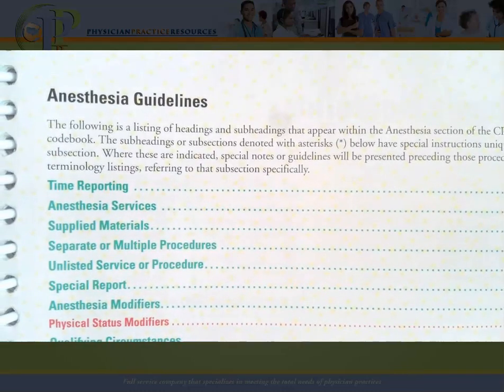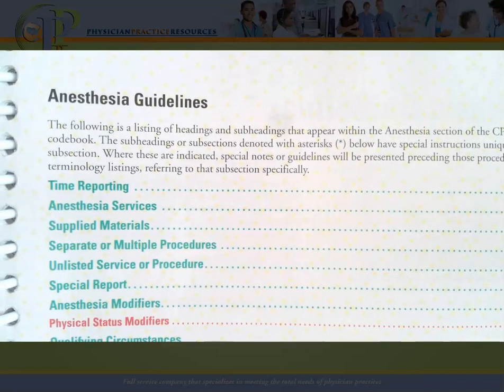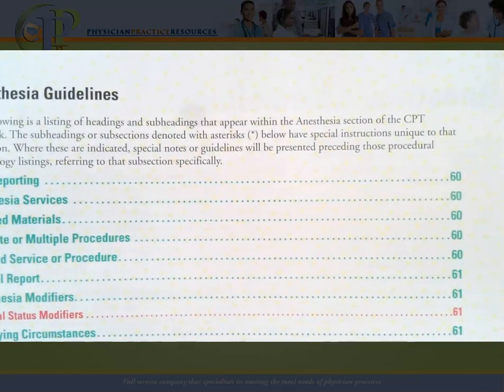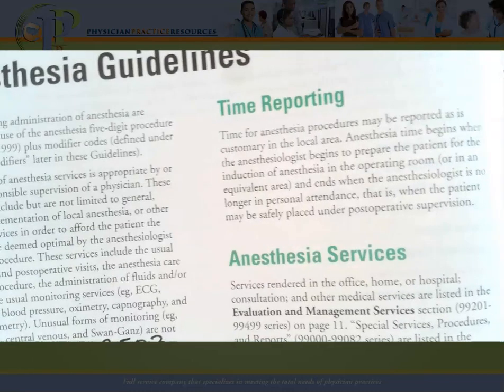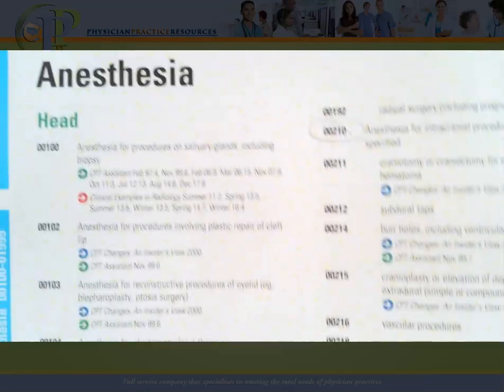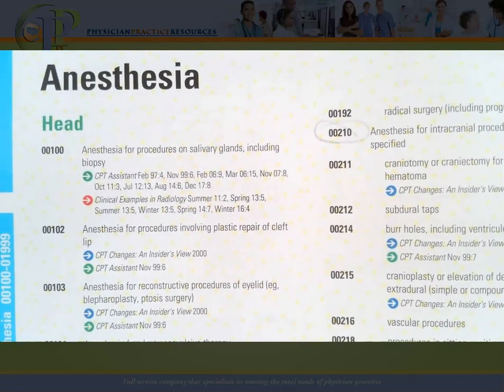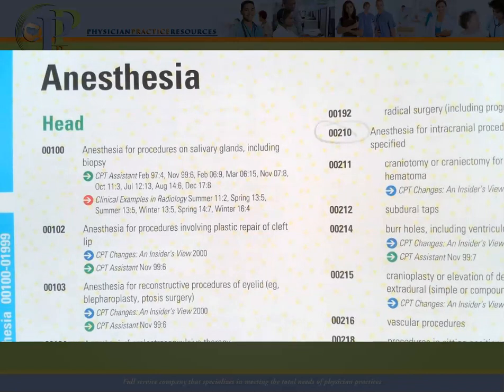The second section of Category 1 is anesthesia — the codes reported for our anesthesia providers such as anesthesiologists and certified registered nurse anesthetists. Like the E&M section, anesthesia starts with a table of contents, followed by guidelines on green pages, and then the anesthesia codes themselves. The anesthesia codes start with a zero and are in numerical order. The evaluation and management codes are up front because they are the most widely used, allowing quick access.